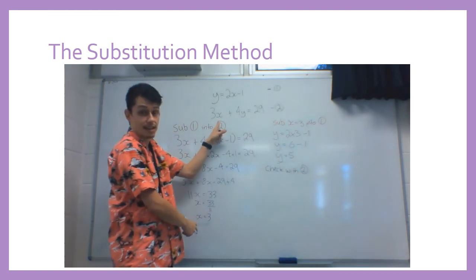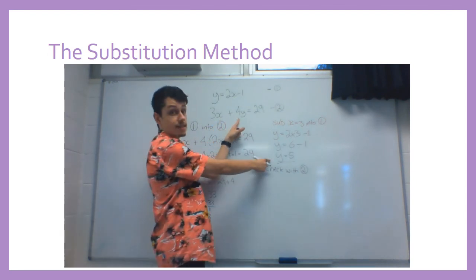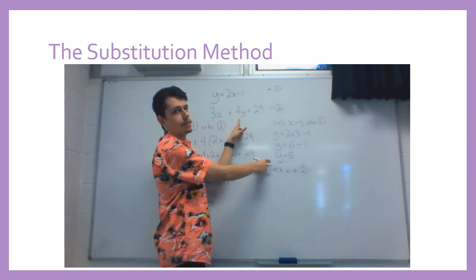So everywhere I see an x in this equation, I'm going to put a 3 instead. And everywhere I see a y, I'm going to put a 5 instead.